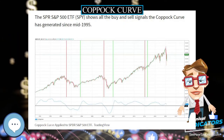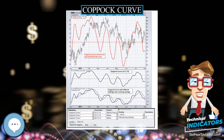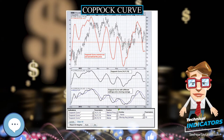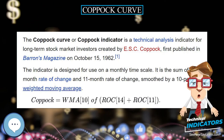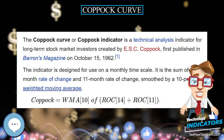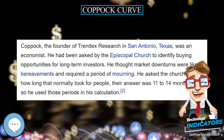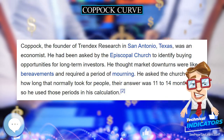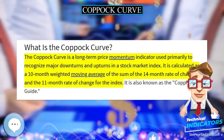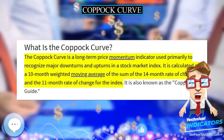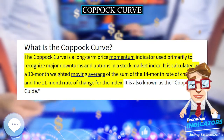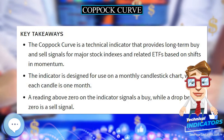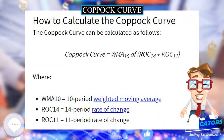Coppock, the founder of Trendick's Research in San Antonio, Texas, was an economist. He had been asked by the Episcopal Church to identify buying opportunities for long-term investors. He thought market downturns were like bereavements and required a period of mourning. He asked the church bishops how long that normally took, and their answer was 11 to 14 months — so he used those periods in his calculation.